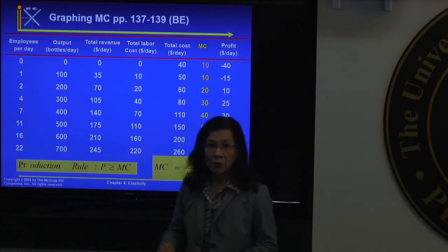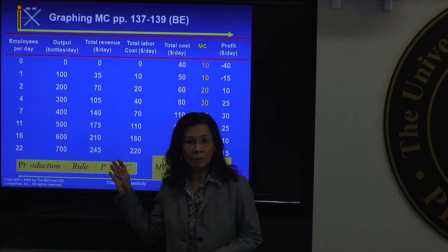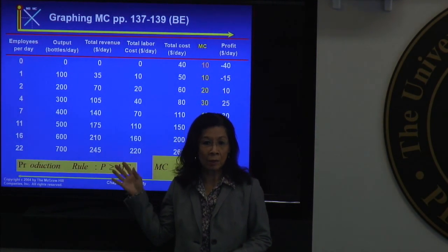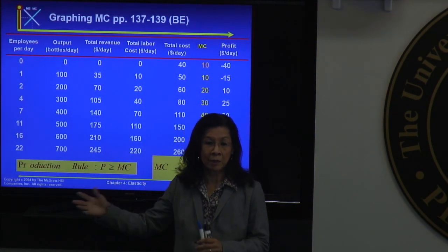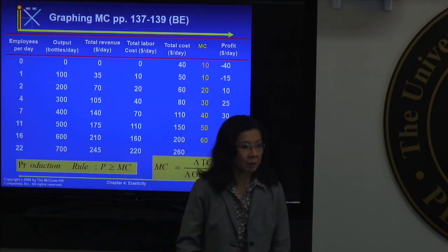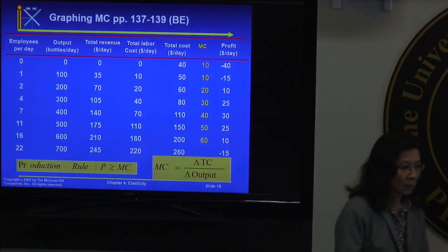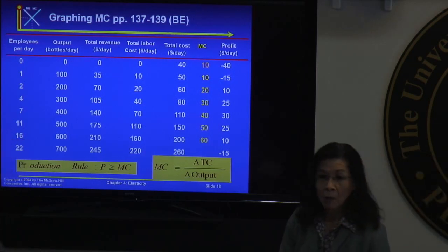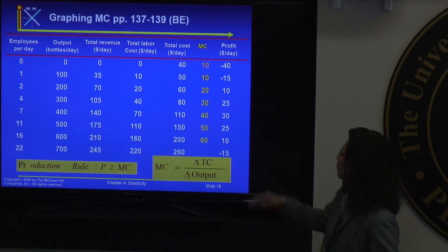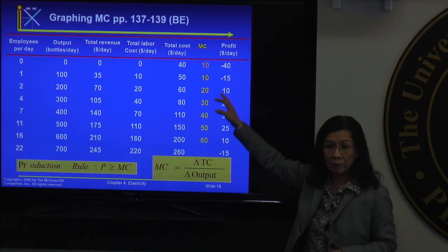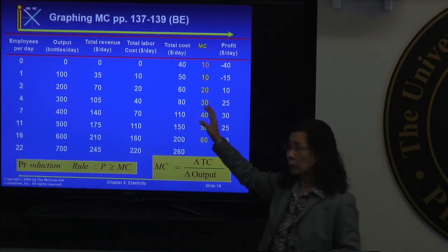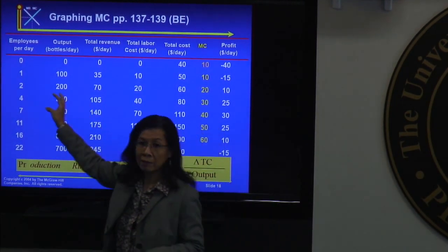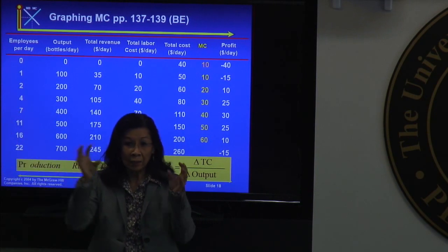With this method using marginal cost, you only need one slide. So what we did in the past was in the last class, we do all the calculation, and then you look at the highest profit. And then you look across and find what is the level of output, and that is the answer.